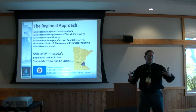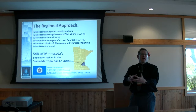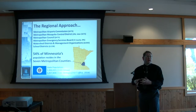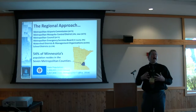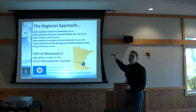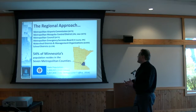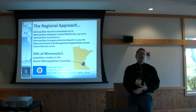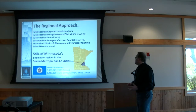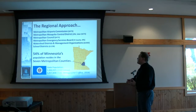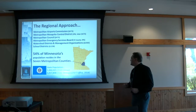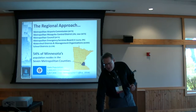Why do we have a regional approach? In Wisconsin you have dominant metro areas in Milwaukee, Madison, and the Fox Valley. We have one super-dominant metro area — over half of Minnesota's population, fifty-four percent, lives in seven of our 87 counties. There are a number of regional governments created by the legislature: an airports commission, a metro mosquito control district, watershed districts with taxing authority, school districts. You're looking at about 3.2 million people packed into those seven counties.